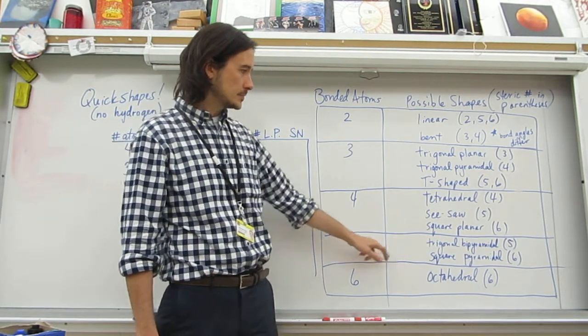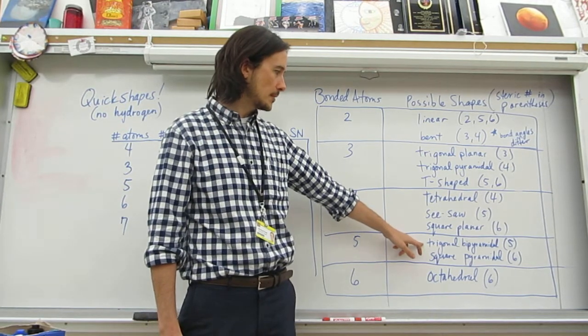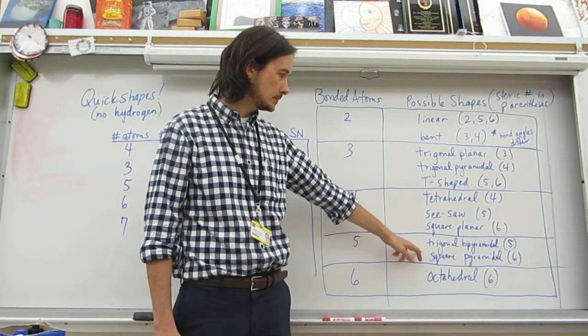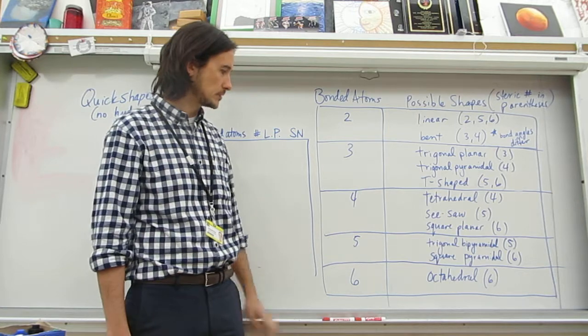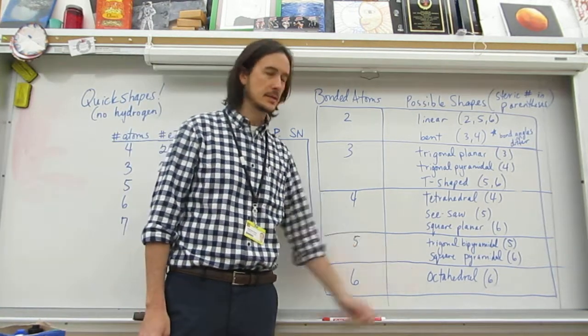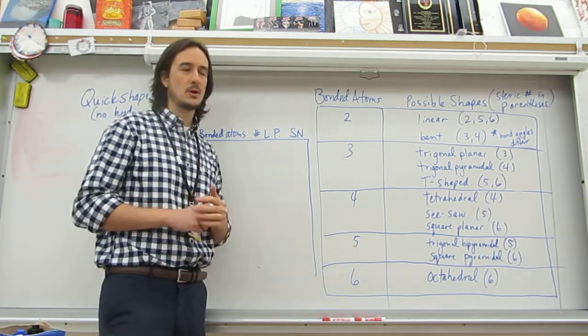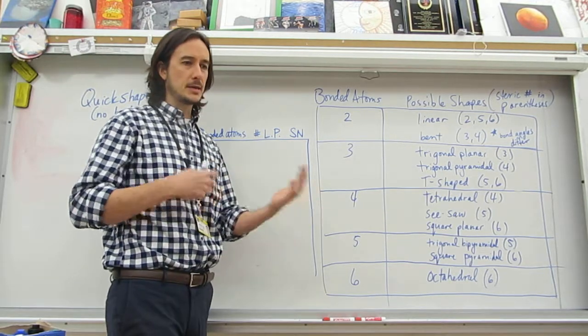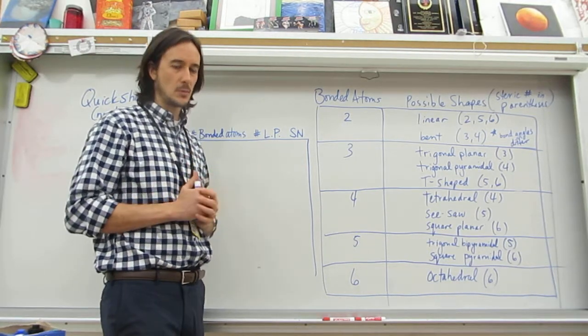Five bonded atoms is going to give you trigonal bipyramidal or square pyramidal for steric numbers 5 or 6. And bonded atom 6 is going to be octahedral. We're not going past that. We don't have 6 bonded atoms and any lone pairs.